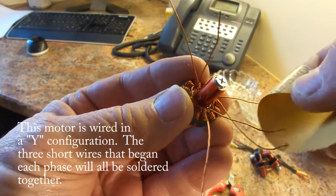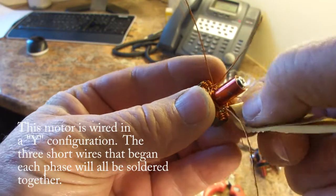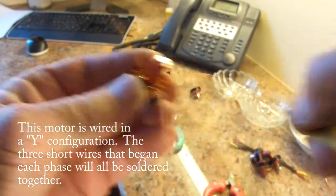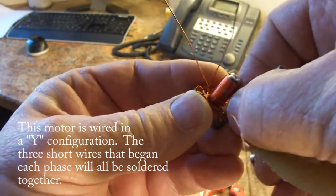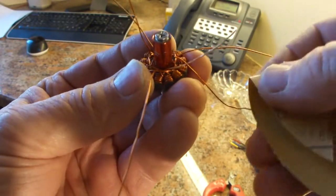So we're just going to simply take some sandpaper. We're going to see if we can't get the insulation off those short wires.